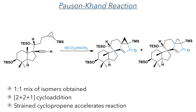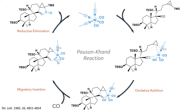This reaction was unselective and produced a racemic mixture of isomers. The acetonitrile ligands on the tungsten complex are quite labile and are easily exchanged, which allows the tungsten to coordinate to both the alkene and the alkyne in a pi fashion. Oxidative addition forms one of the carbon-carbon bonds, and leaves the tungsten complex still coordinated to both carbon groups. A migratory insertion then occurs, promoted by the presence of carbon monoxide.